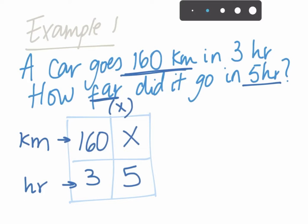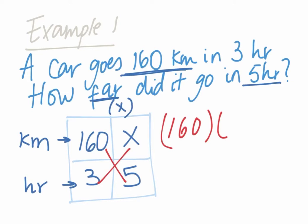Now what you're going to do is simply multiply, cross multiply. So you're going to do 160 multiplied by five is equal to three multiplied by X. So 160 multiplied by five is 800.